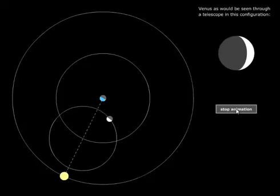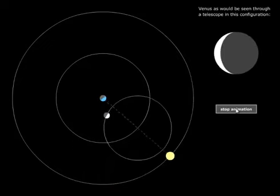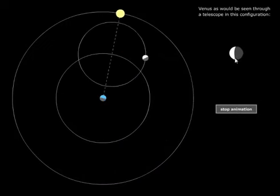When Venus is the biggest, it's a crescent again. Venus is still between the Earth and the Sun. For the Moon, we get a full Moon only when the Moon is on the opposite side of the Earth as the Sun. But in Ptolemy's model, Venus could never be on the opposite side of the Earth as the Sun — Venus is always fixed between the Earth and the Sun. And it always has to be that way in Ptolemy's system. So Venus will only ever show crescent phases.